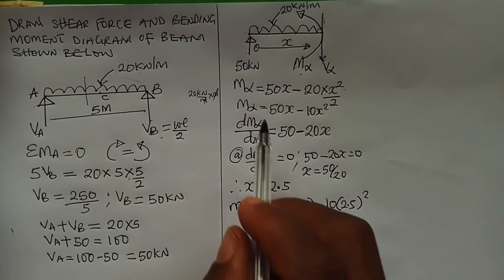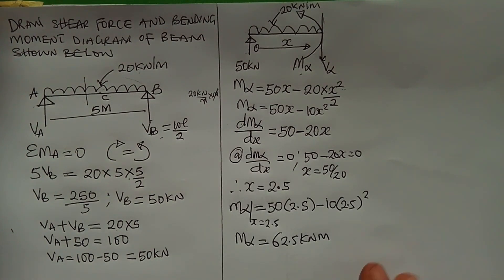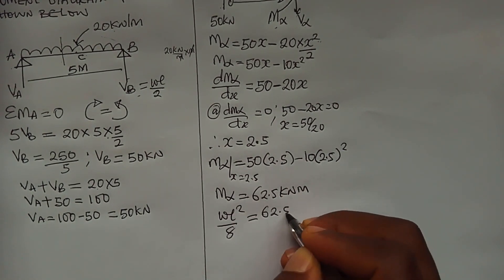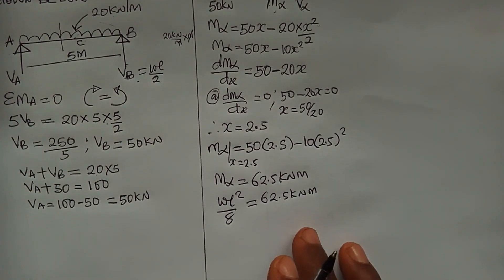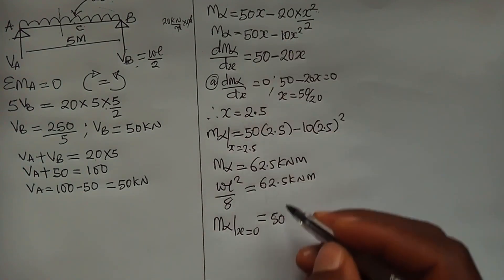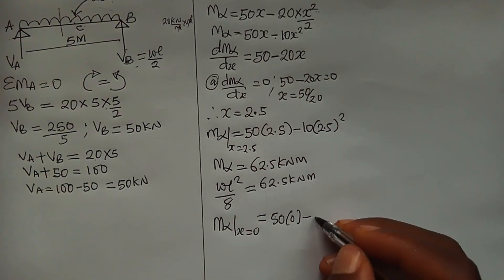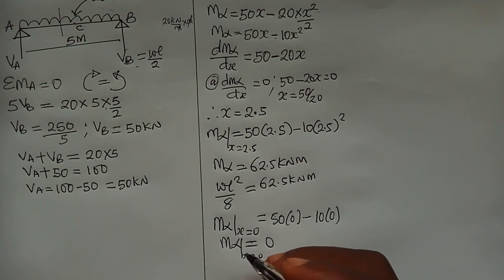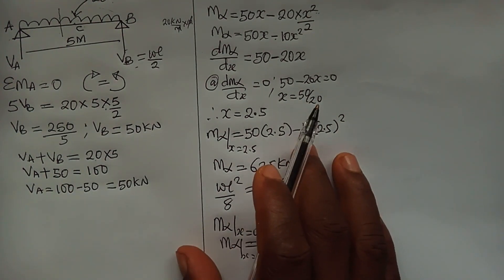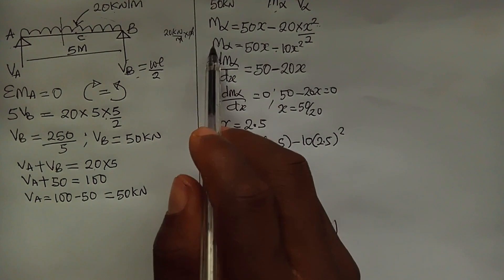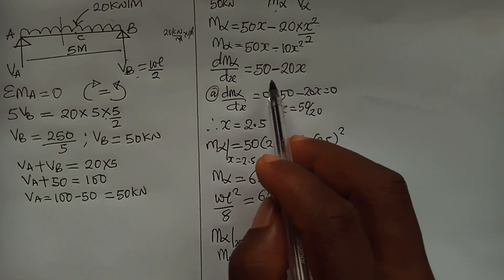If you don't want to go through this process, you can use the formula WL²/8 — that also gives 62.5 kilonewton-meters. Now let's determine the moment at x equals zero: substituting into the expression gives 50×0 minus 10×0, so M at x equals zero is equal to zero. Now for the shear force — when you differentiate the bending moment expression you get the shear force expression.